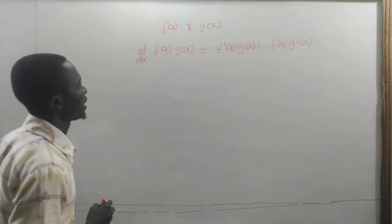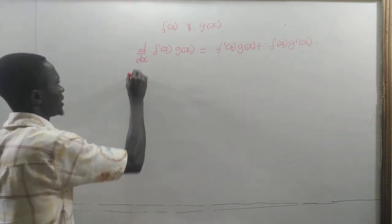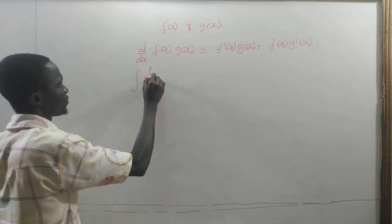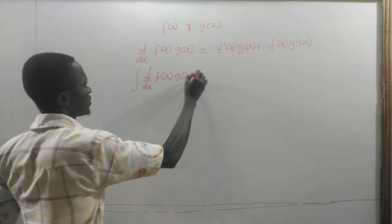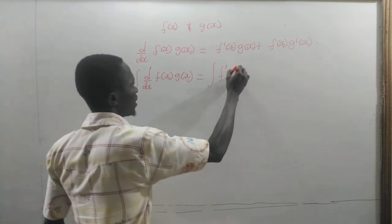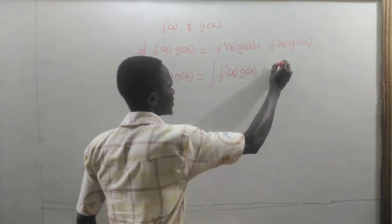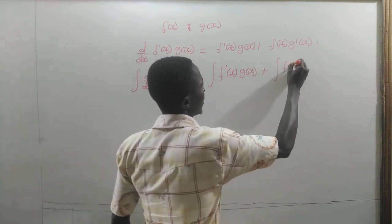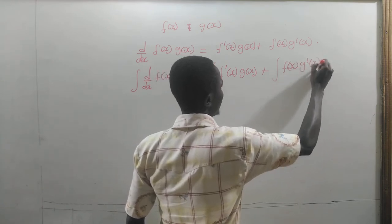Now, let us integrate both sides. The integral of the derivative of f of x times g of x is equal to the integral of f prime of x times g of x plus the integral of f of x times g prime of x.